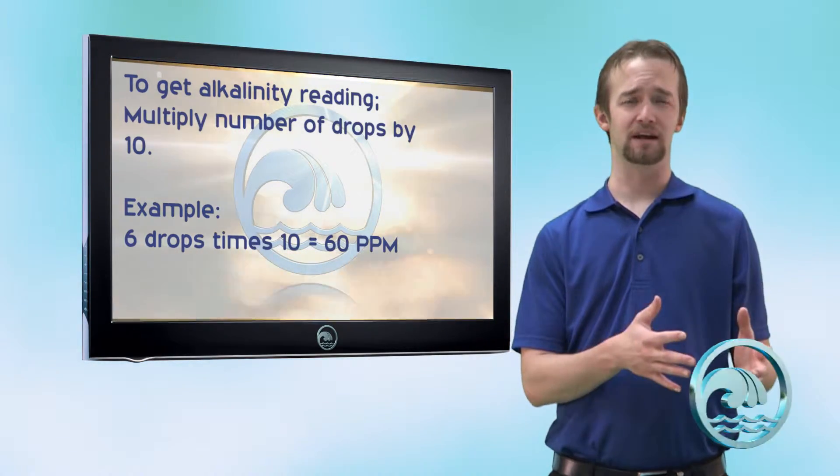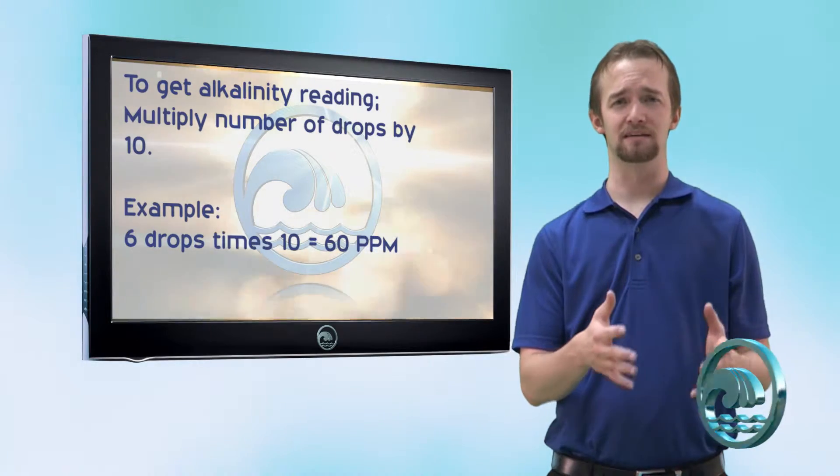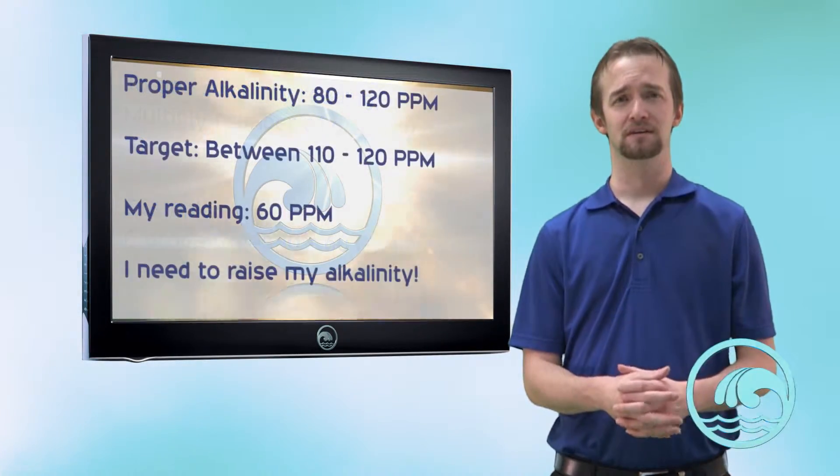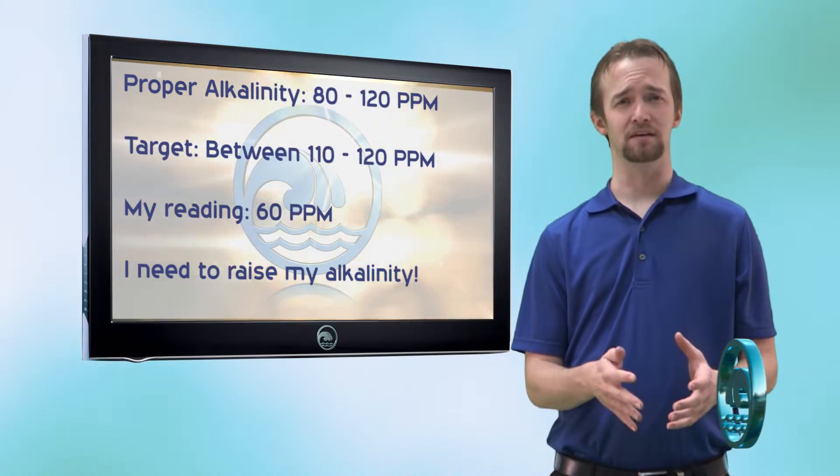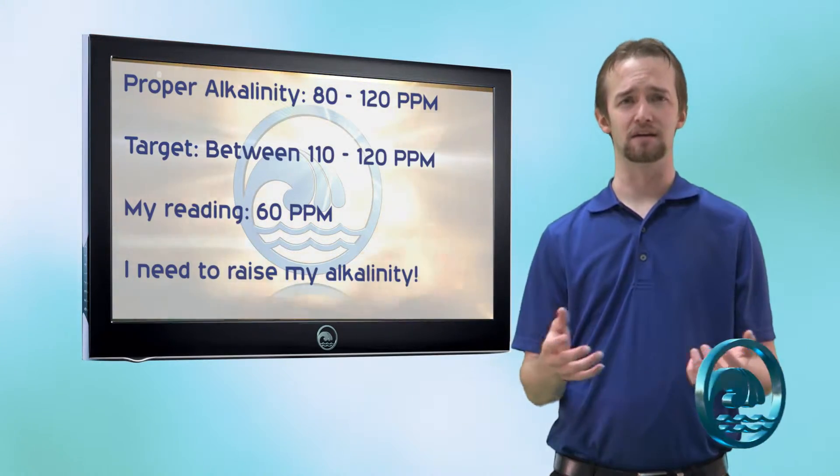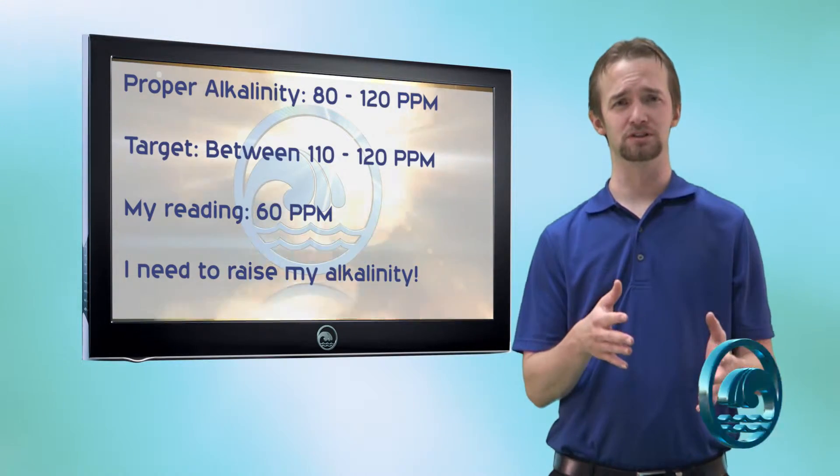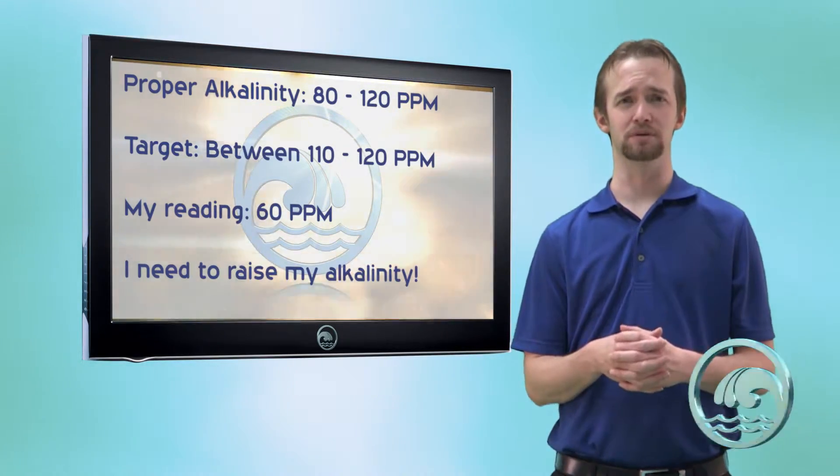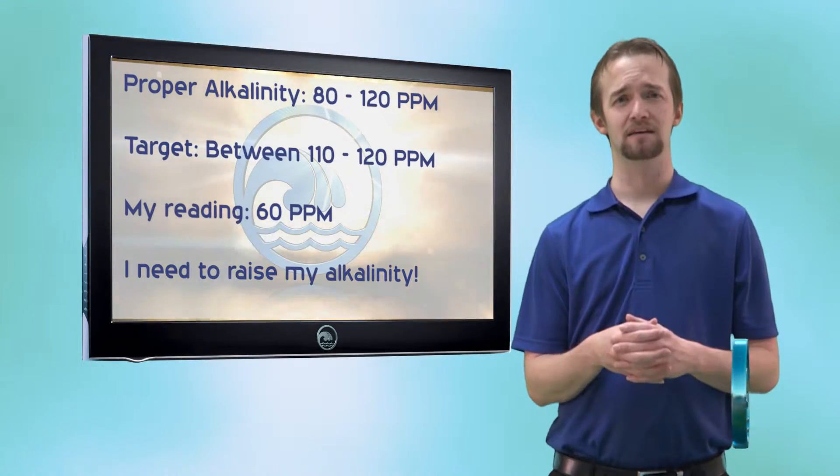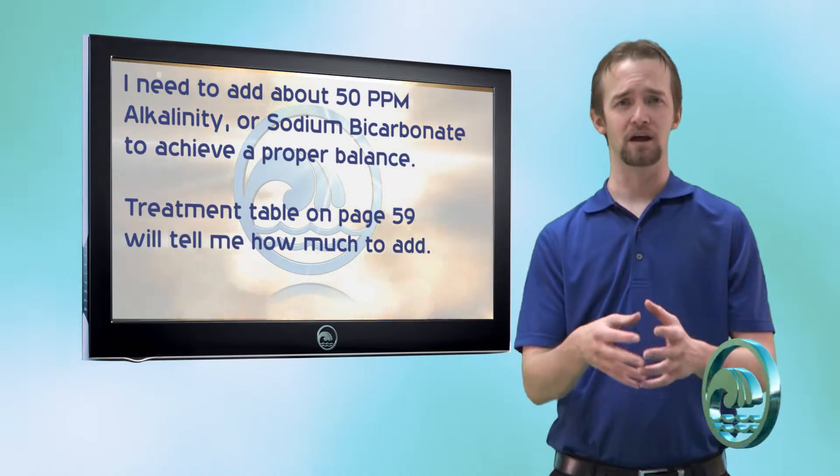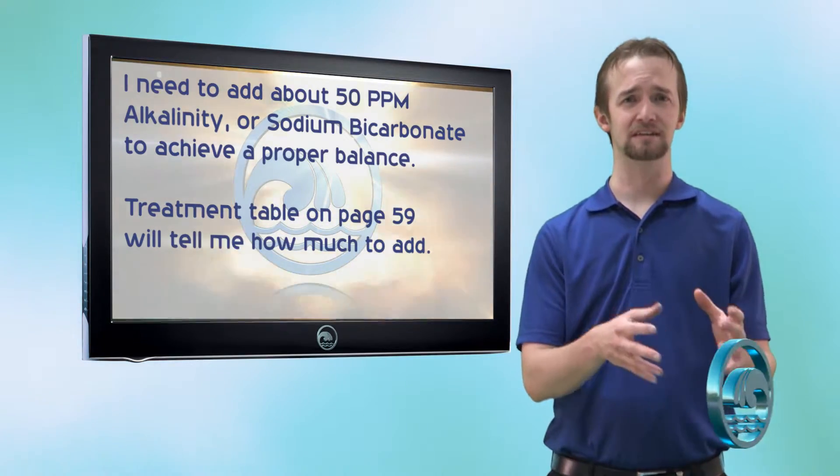Now that I know that, I can figure out how much sodium bicarbonate I need to add to increase my alkalinity back into proper range. So proper range for alkalinity is anywhere between 80 and 120 parts per million. Preferably we want to go between 110 and 120 parts per million. So I'm going to add about 50 parts per million alkalinity to my water in order to increase it from 60 to 110.